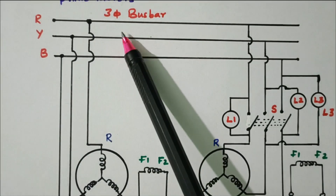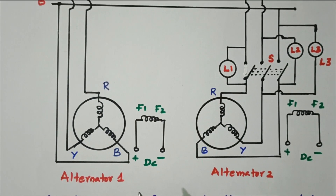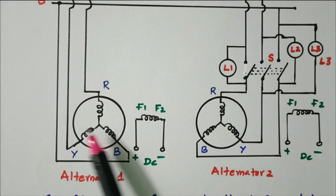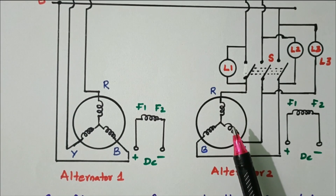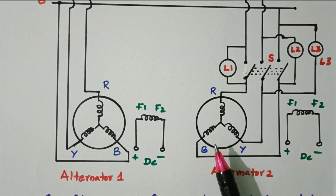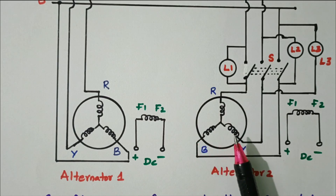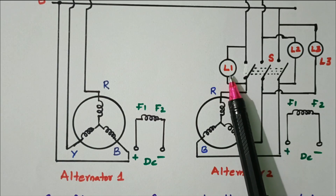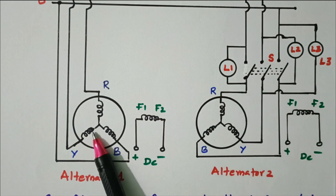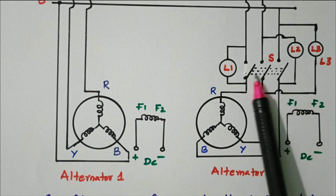Here is the three-phase bus bar R, Y, B. Two alternators are available — alternator 1 is already connected to the bus bar. Our aim is to connect the second alternator by satisfying the conditions for synchronization: voltage of alternators 1 and 2 should be equal, then frequency and phase sequence should also be equal. For this we use the lamp dark and bright method.